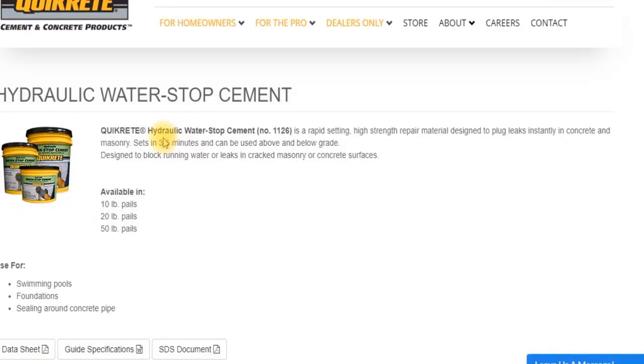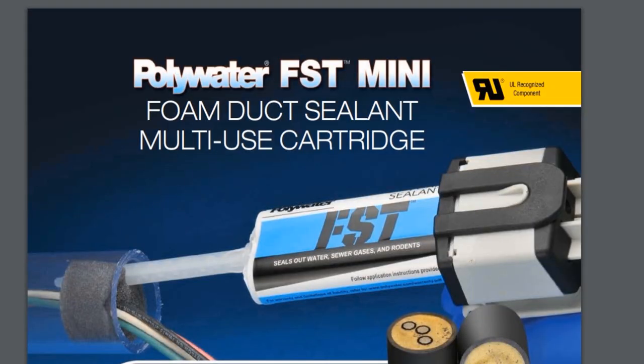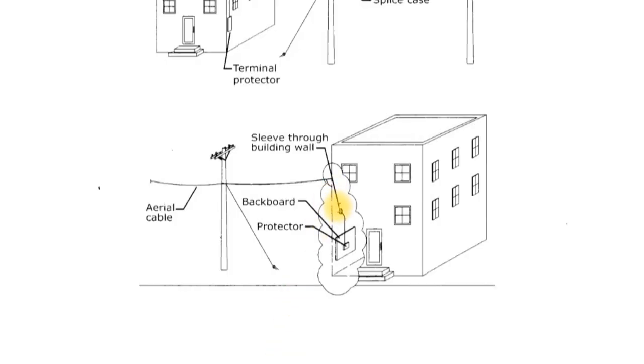So don't forget the hydraulic concrete on the outside. You're going to want this poly water product in the conduit with the cable, seal it nice and then conduit sleeve. So just a little tip there.